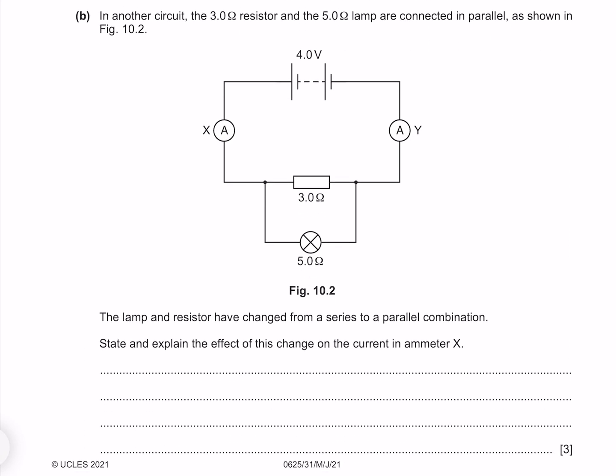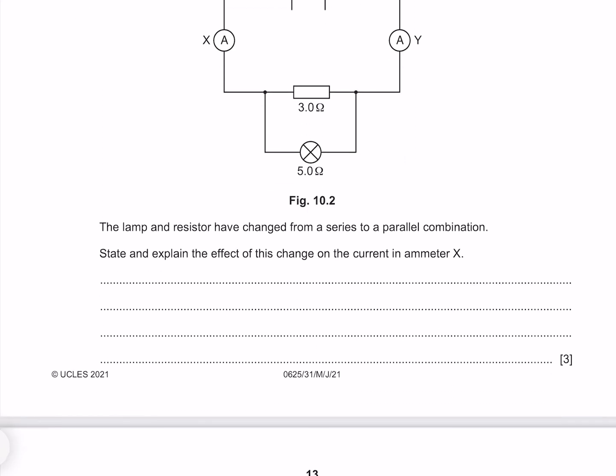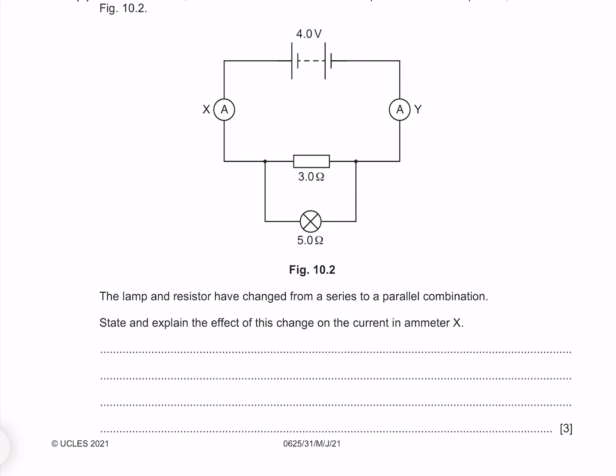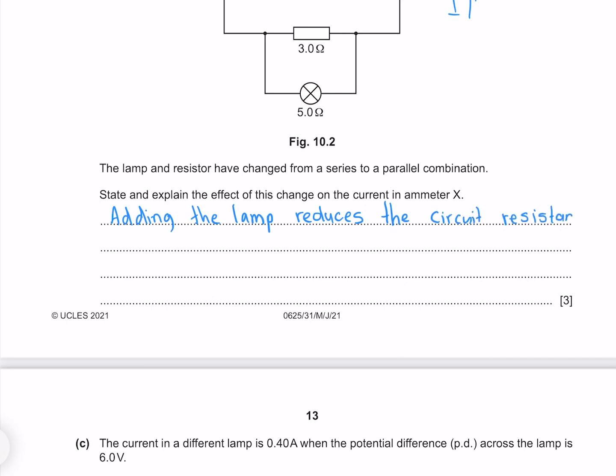In another circuit the 3 ohm resistor and the 5 ohm lamp are connected in parallel, as shown in figure 10.2. The lamp and resistor have changed from a series to a parallel combination. State and explain the effect of this change on the current in ammeter X. When you add resistors in series, you increase the resistance, which leads to a reduction in the current. Whereas when you add a resistor in parallel, the resistance decreases, because what's important is not that you've added a resistance, it is that you've added another pathway. No matter how bad that pathway, it still allows more current to flow. Adding the lamp reduces the circuit resistance below its initial value of 3 ohms. As a result, the current increases and the reading on ammeter X will be greater.